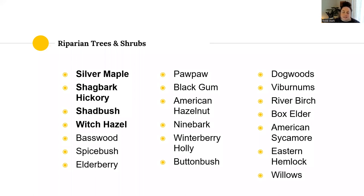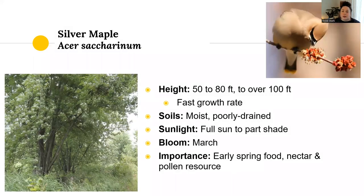American sycamore is a great buffer staple — a real workhorse. They grow fast, get really big, have interesting bark, and look pretty. Silver maple can be a little messy and drops limbs, so it might not be best for a yard area, but it is a nice big tree at 50 to 80 feet high with a fast growth rate. They like moist, poorly drained soil, doing really well in that riparian area right next to the stream with wet feet. They like full sun to part shade, bloom in March, and are a really important spring food, nectar, and pollen resource for wildlife.